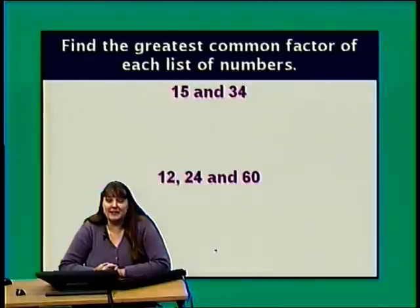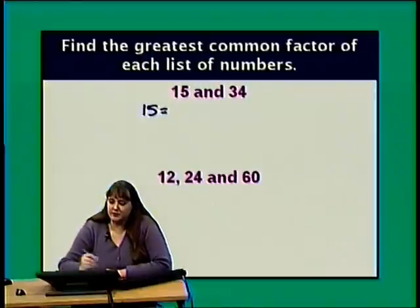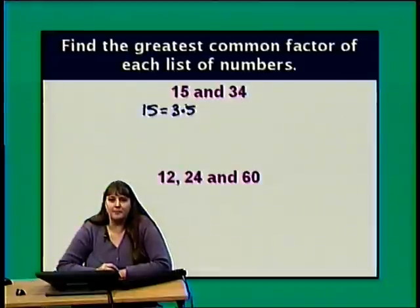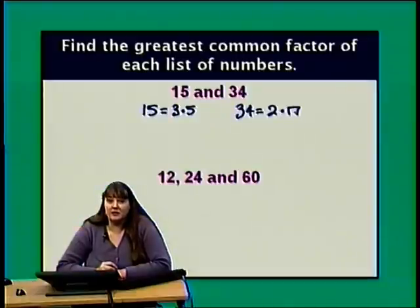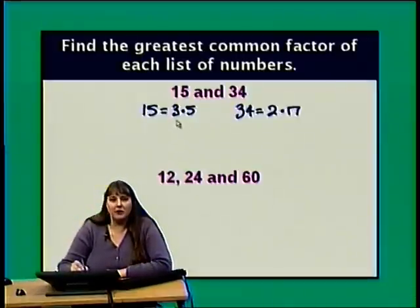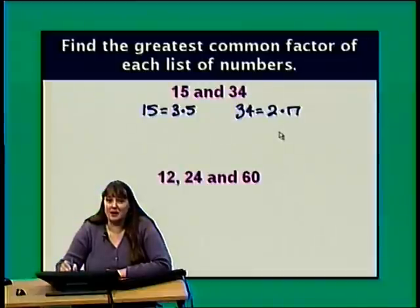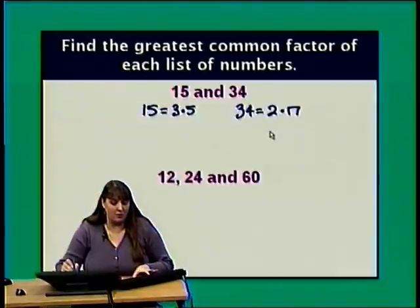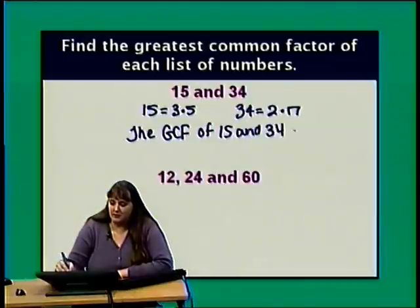What about 15 and 34? 15 is 3 times 5 — both prime. 34 is even, so 34 is 2 times 17, and 17 is also prime. Looking for common prime factors: 15 has 3 and 5, while 34 has 2 and 17. There are no prime factors in common, so the GCF of 15 and 34 is 1.